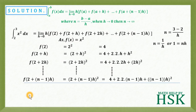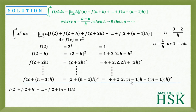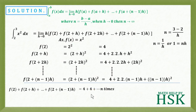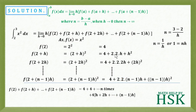Now we total all these terms systematically. The constant 4 appears in every term, so it gets added n times giving 4n. For the middle terms: 2 times 2h plus 2 times 2 times 2h up to 2 times 2 times n minus 1 into h can be written as 4h times the sum 1 plus 2 up to n minus 1.